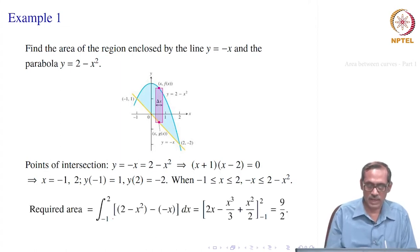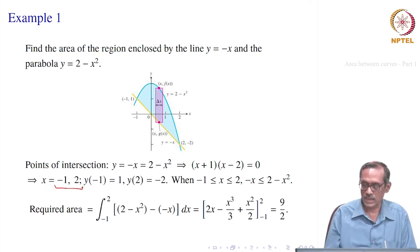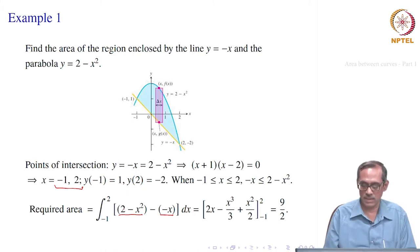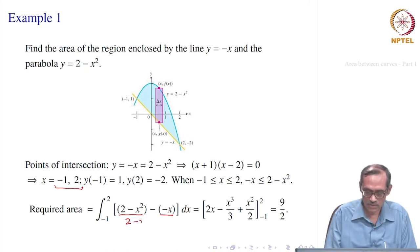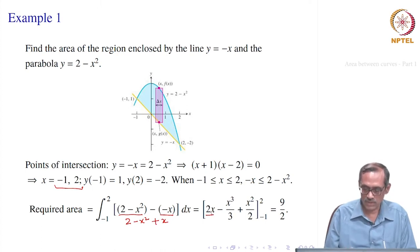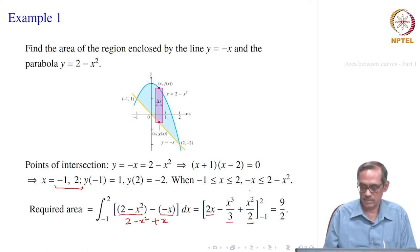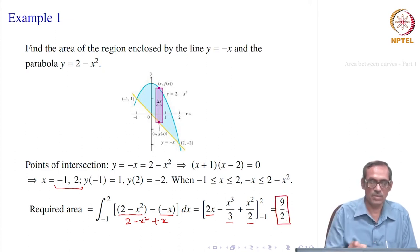The integrand simplifies to 2 − x² + x. Integrating: 2 integrates to 2x, −x² integrates to −x³/3, and x integrates to x²/2. Evaluating from −1 to 2 and subtracting, the result simplifies to 9/2. This is how we compute areas between curves.